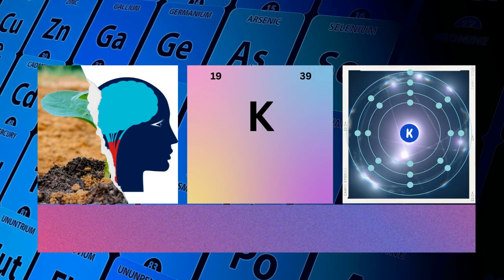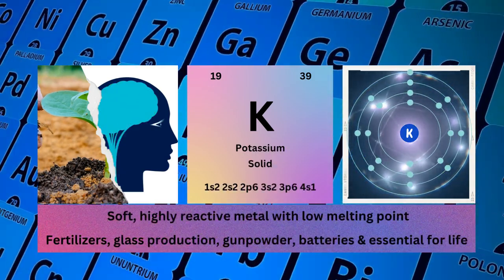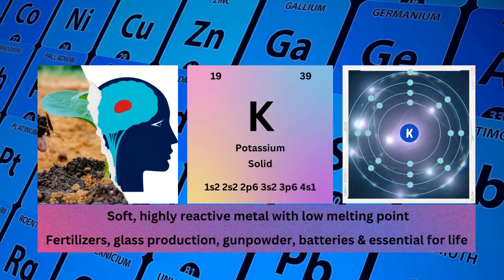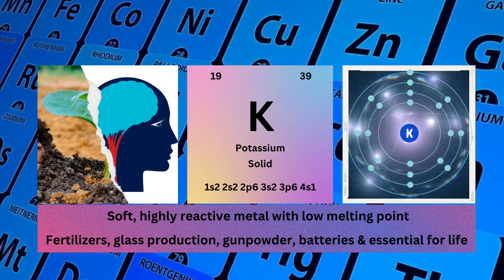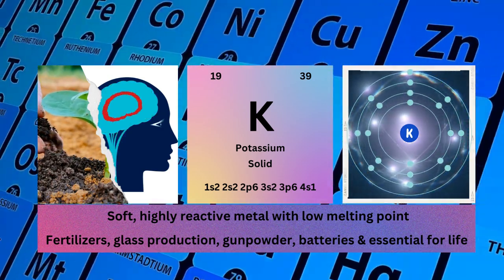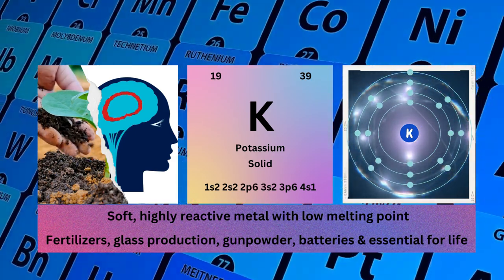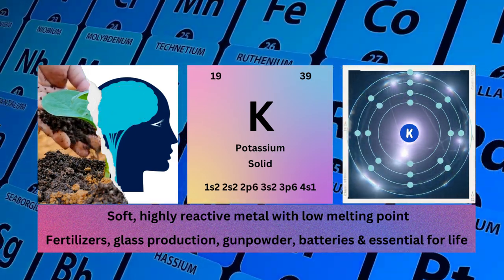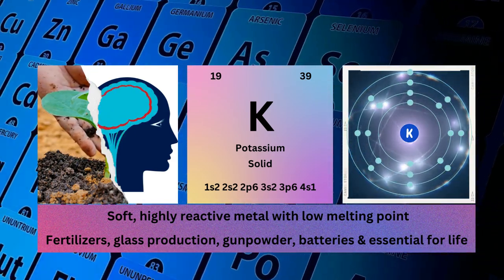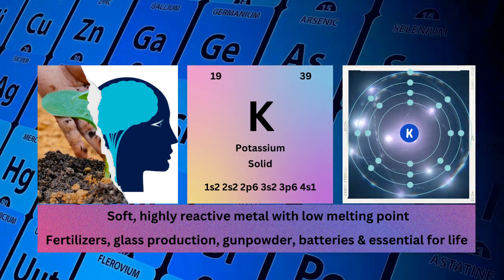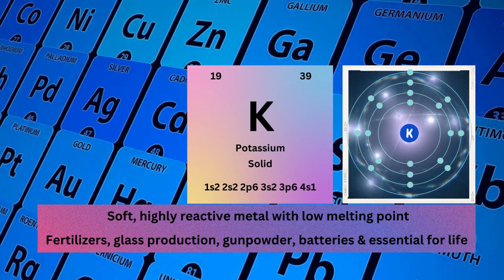Potassium, atomic number 19, mass number 39, symbol K, state solid, electronic configuration 1s²2s²2p⁶3s²3p⁶4s¹. Physical properties: soft, highly reactive metal with low melting point. Potassium uses: fertilizers, glass production, gunpowder, and batteries.